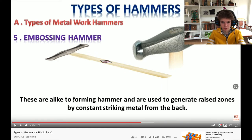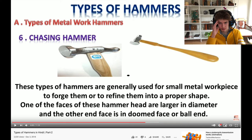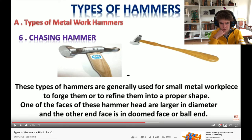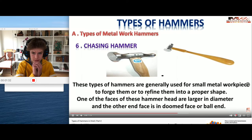It looks just like the other ones - like constantly striking them from the back. They are very similar to forming hammers. I'm sure this is more types of hammers than you'd find on the Wikipedia page. Chasing hammer - that looks so poorly proportioned: the bottom is huge, then it gets thin, then it gets thicker again, and one side is really big. It's for small metal work pieces - but if it's for small work why is it so freaking big on the end? One of the faces of these hammers is larger, and the other face is domed.